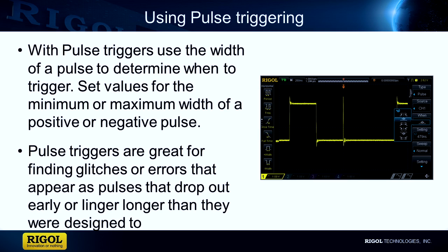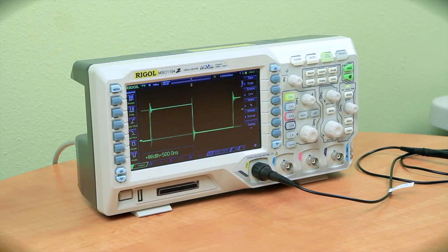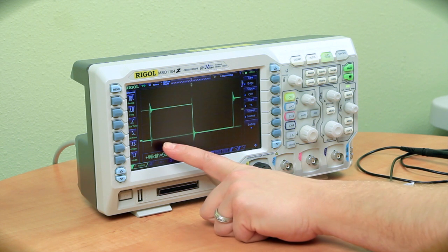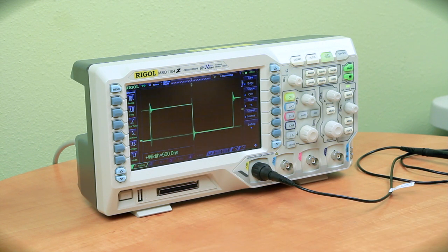Let's look at an example of a signal which has an occasional dropout or glitch. At first, we trigger normally on the falling edge. We can occasionally see an aberrant signal here. So the question is how to isolate the aberration from the surrounding pulses.